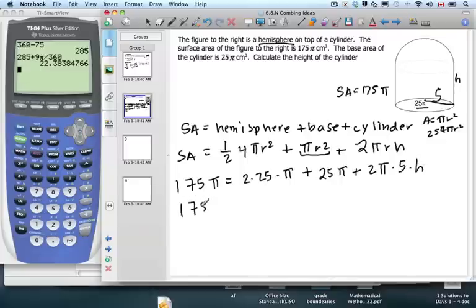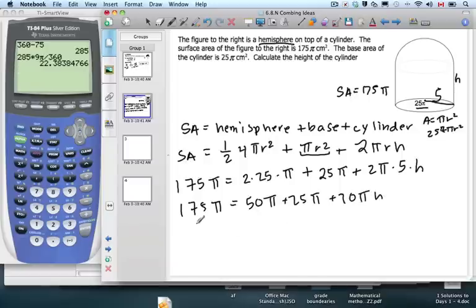Let's get rid of some of this stuff and simplify it out. So we get 50 pi plus 25 pi plus 10 pi h equals 175 pi. So now it's just algebra, all the geometry part's done. So we get 75 pi plus 10 pi h. Minus 75 pi from both sides, so I get 100 pi equals 10 pi h.